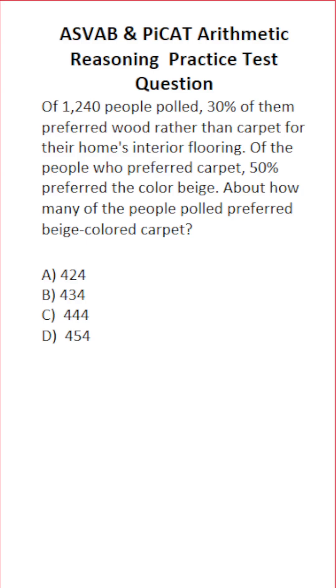This arithmetic reasoning practice test question for the ASVAB and PICAT says, of 1,240 people polled, 30% of them preferred wood rather than carpet for their home's interior flooring. Of the people who preferred carpet, 50% preferred the color beige. About how many of the people polled preferred beige-colored carpet?